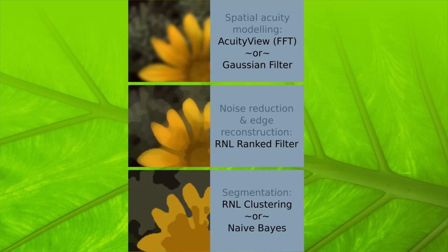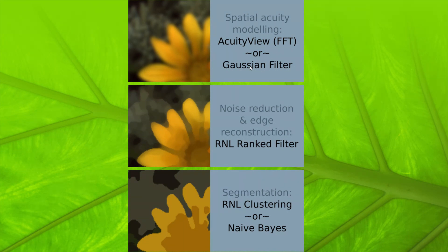Next, the QCPA framework allows you to apply spatial acuity modelling. There are different methods for doing this, whether in the frequency domain or the spatial domain. This takes away information that wouldn't be visible to a given receiver at a given distance, given their acuity.